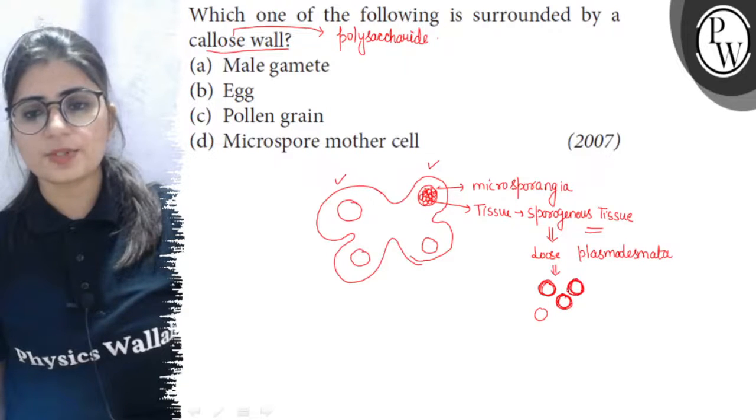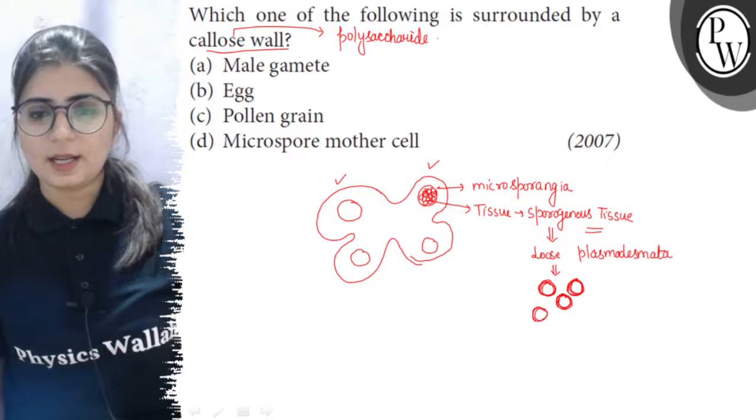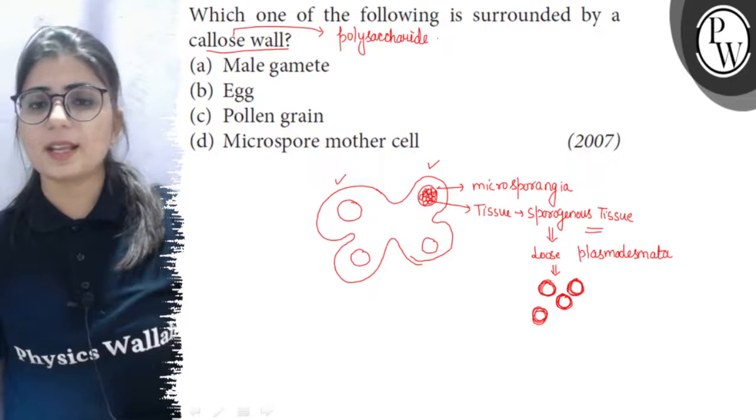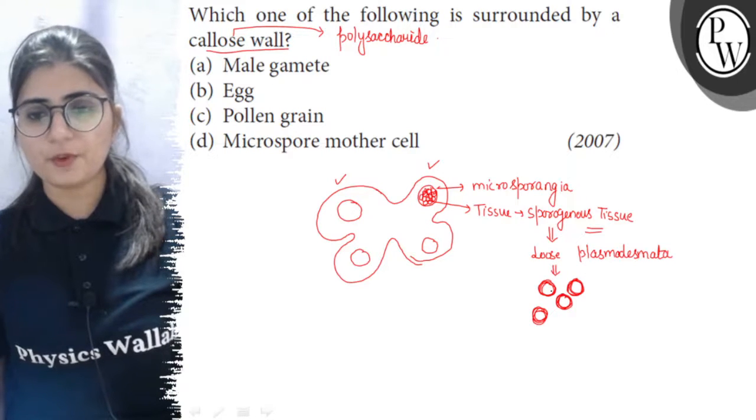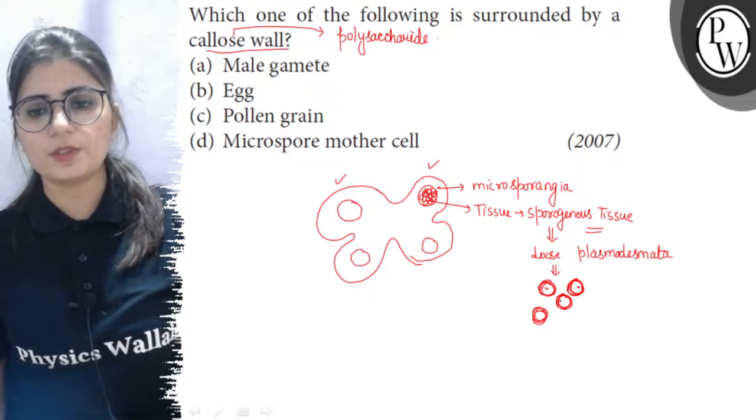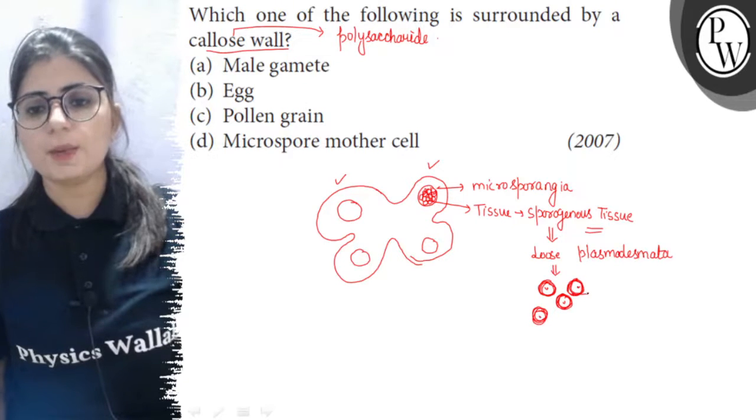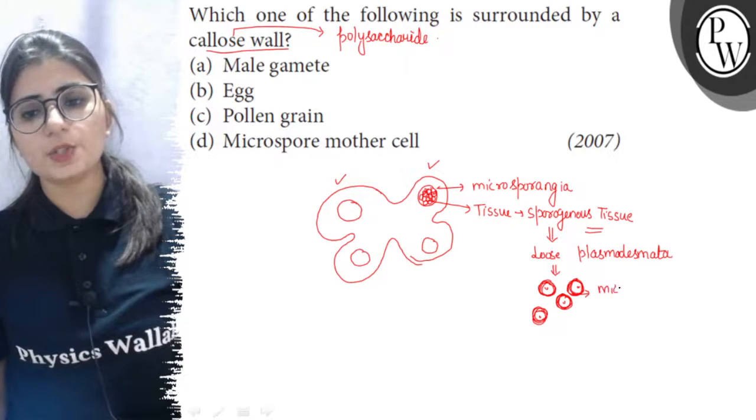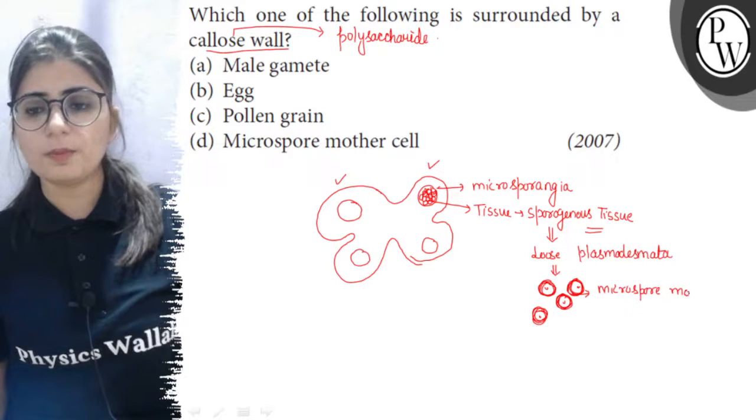Means callose is deposited around these cells and due to this callose deposition, they get separated from each other and each cell of this sporogenous tissue now behaves as microspore mother cell. Now, they will undergo meiosis to form the microspores.